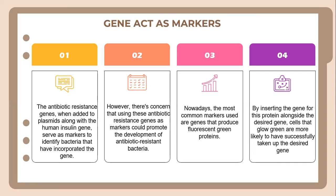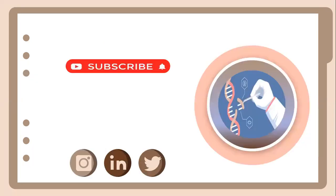Next, let's look at genes acting as markers. The antibiotic-resistant gene, when added to a plasmid along with the human insulin gene, serves as a marker to identify bacteria that incorporated the gene. However, there is a concern that using antibiotic-resistant genes as markers could promote the development of antibiotic-resistant bacteria. Nowadays, the most common markers used are genes that produce fluorescent green proteins. By inserting the gene for this protein alongside the desired gene, cells that glow green are more likely to have successfully taken up the desired gene.